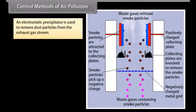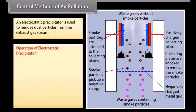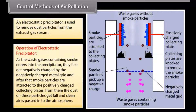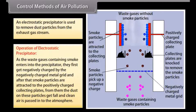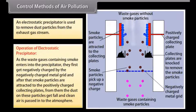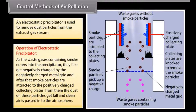An electrostatic precipitator is used to remove dust particles from the exhaust gas stream. As the waste gases containing smoke enter the precipitator, they first get negatively charged by the negatively charged metal grid, and after that, smoke particles are attracted to the positively charged collecting plates. The dust on these particles falls, and clean air is passed into the atmosphere.